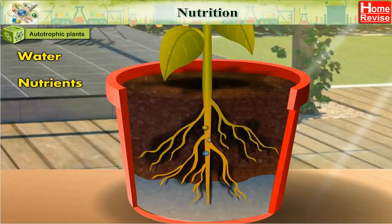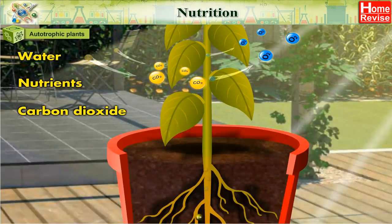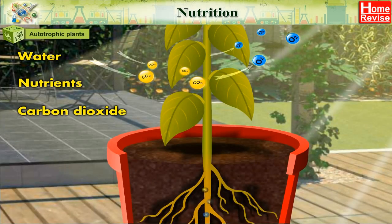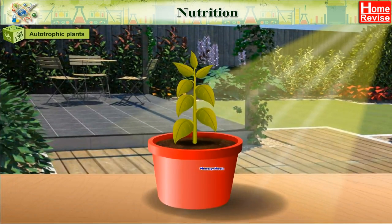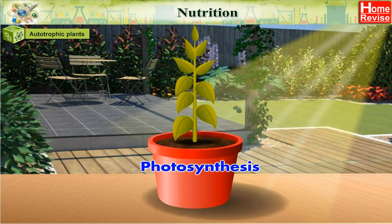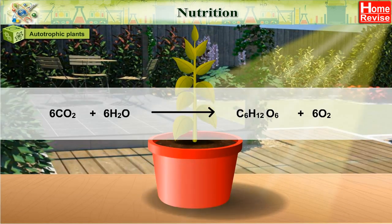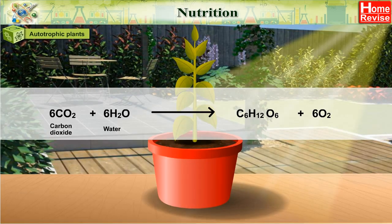Plants also use carbon dioxide from the air. This process is called photosynthesis. The equation is: 6CO₂ (carbon dioxide) plus 6H₂O (water), in the presence of sunlight and chlorophyll, gives C₆H₁₂O₆ (glucose).